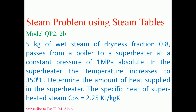Hello, I am going to solve a steam problem using steam tables from the model question paper. The problem is: 5 kg of wet steam of dryness fraction 0.8 passes from a boiler to a superheater at a constant pressure of 1 mega Pascal absolute. In the superheater, the temperature increases to 350 degrees Celsius. Determine the amount of heat supplied in the superheater.